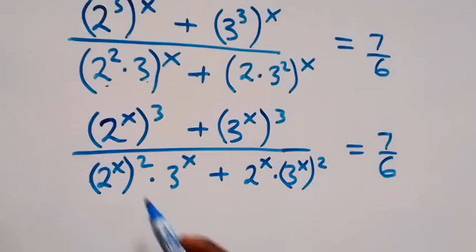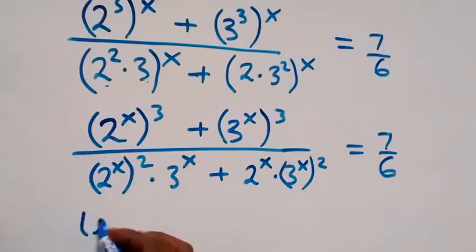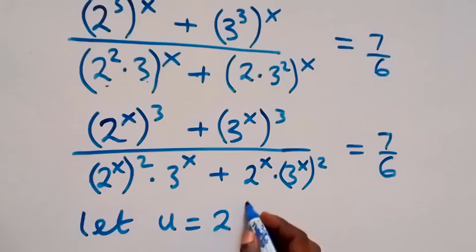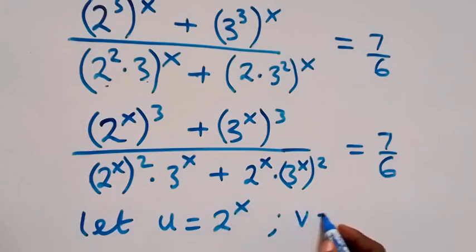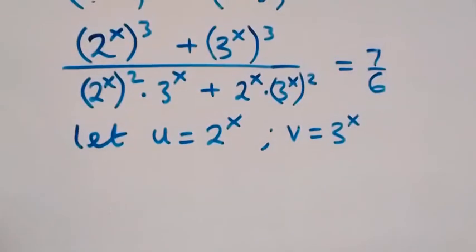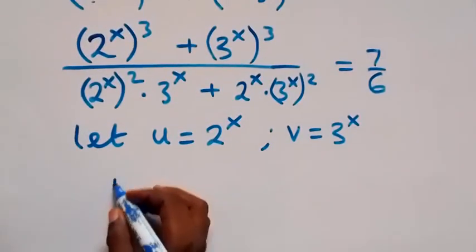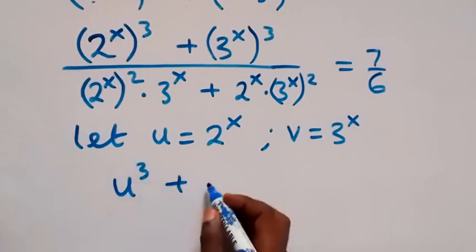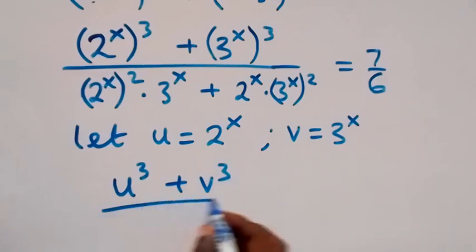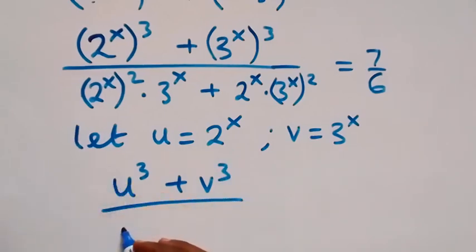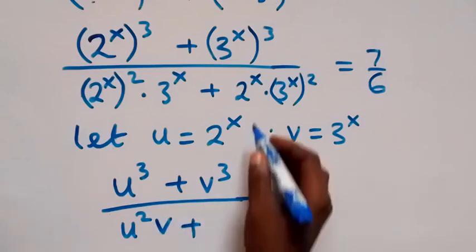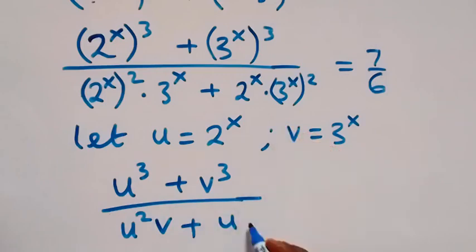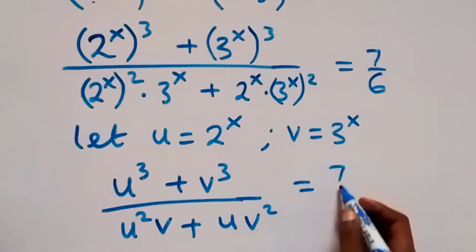We can see that 2 raised to the power x and 3 raised to the power x are common, so let's use substitution. Let u equal 2 raised to the power x, and let v equal 3 raised to the power x. Then we can write the numerator as u cubed plus v cubed, and the denominator as u squared times v plus u times v squared, which equals 7 over 6.